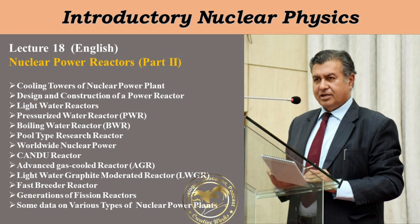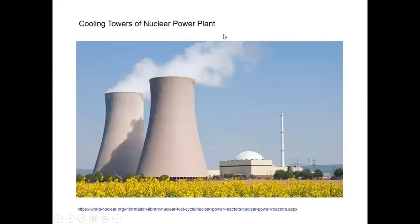This is an Introductory Nuclear Physics course, and today we are going to talk about Fission Reactors Part 2, in continuation of this three-part lecture series. Let's recap. The question is how electricity is being produced in nuclear power plants through fission.